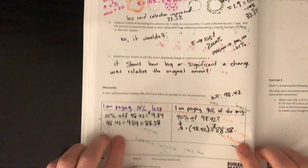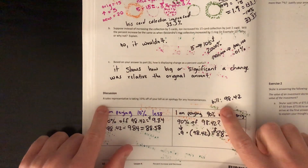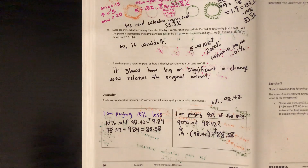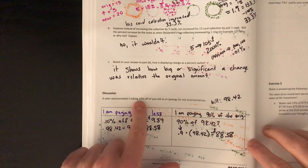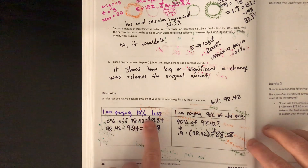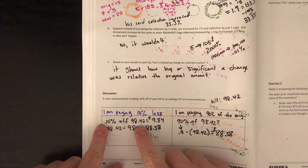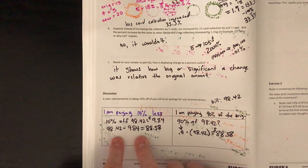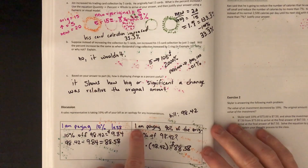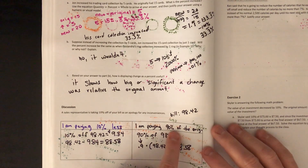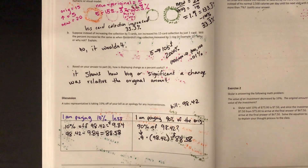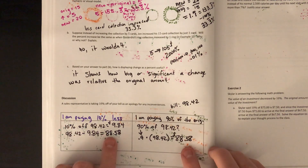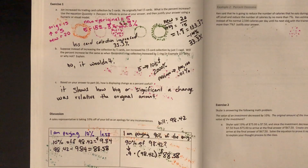The last thing we were talking about yesterday was how anytime you have one of these questions where you're increasing or decreasing something by a certain percent, you've got two ways of thinking about it. For example, if you're taking 10% off a bill, you could think of it as paying 10% less and subtracting that off, or you could think of it as just paying 90% of the original price. Both ways come out to the same answer.